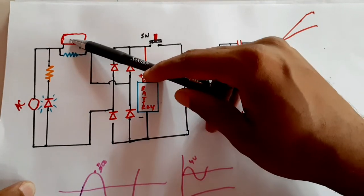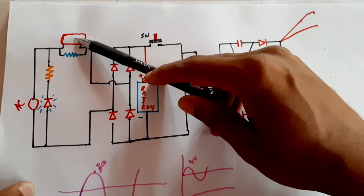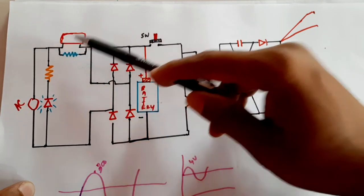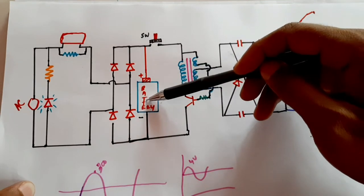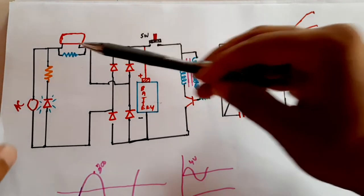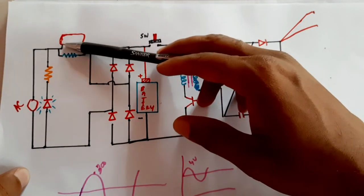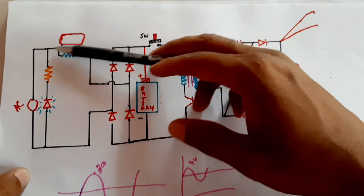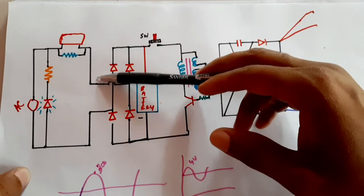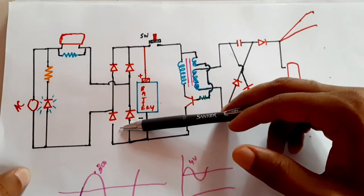The working of the voltage dropper: this capacitor has a certain reactance — that means AC resistance — at a certain frequency. At our input frequency of 50 Hz, it offers a very high resistance and most of the 230 volts drops across it. The remaining voltage, around 4 volts peak-to-peak, is available and is rectified using a bridge rectifier.